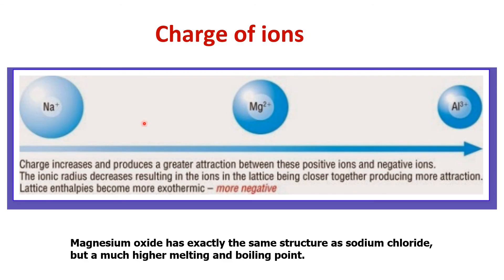The second factor affecting lattice enthalpy is the charge of the ion. Comparing sodium, magnesium, and aluminium ions — as charge increases, ion size decreases. Aluminium ion has the smallest size. Greater charge means stronger attraction between cation and anion, so lattice enthalpy increases. This explains why magnesium oxide has the same structure as sodium chloride but a much higher melting and boiling point, because Mg²⁺ has higher charge and smaller size than Na⁺.